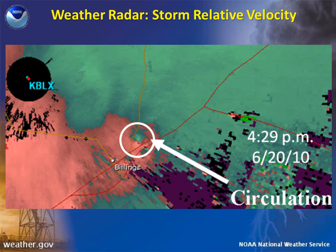Another velocity product that the Doppler radar generates is called storm-relative velocity, where the average motion of all storms in the region is subtracted. This gives the viewer a better approximation of the wind field in or near an individual thunderstorm. For this reason, we are able to see circulation within a single thunderstorm better than on base velocity products.